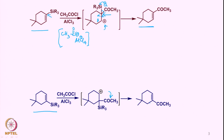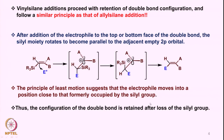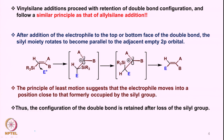It is quite possible to rationalize that vinylsilane additions proceed with retention of double bond configuration and follow a similar principle as that of allylsilane addition. What does this mean?